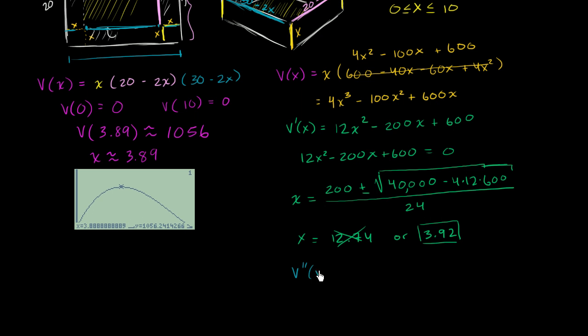V double prime of x is going to be equal to 24x minus 200. And you can see by inspection that this number is less than 4. So this thing is going to be less than 100. You subtract 200, so we can write the second derivative at 3.92 is going to be less than 0.